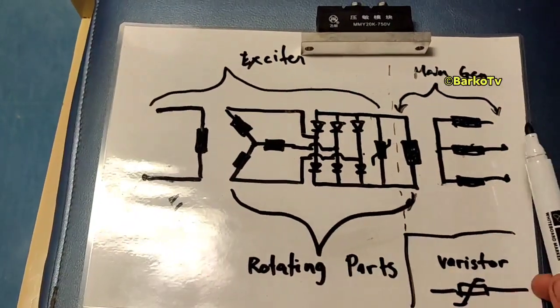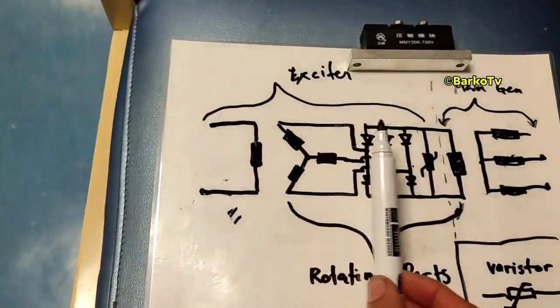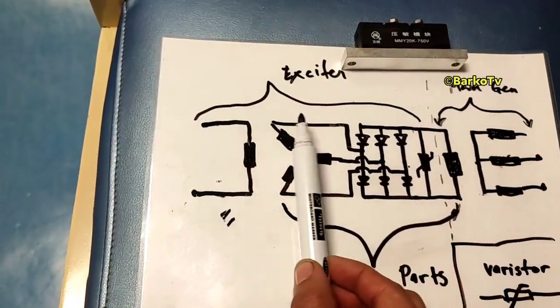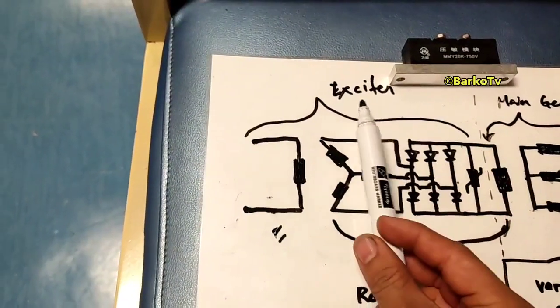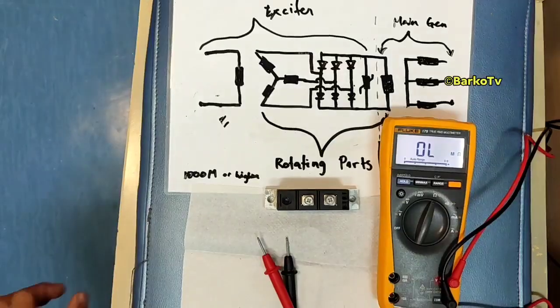There are rotating parts and this is the cover for main generator and this part going to this one is the exciter part. Okay, let's start.